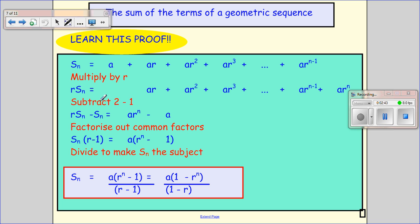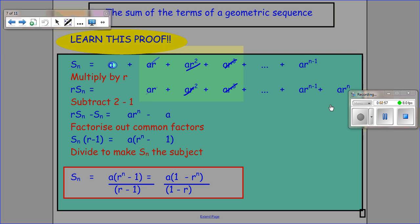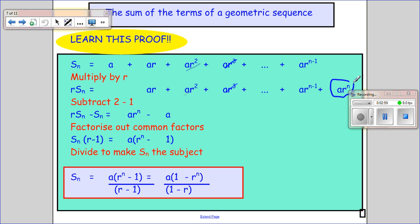So when I subtract this one from that one, so r sn minus sn, can you see that this one take away, that disappears, that disappears, that disappears. They're all going to disappear except that first a and the last a to the rn.